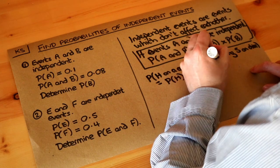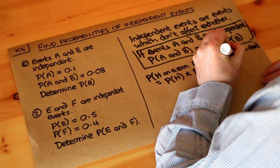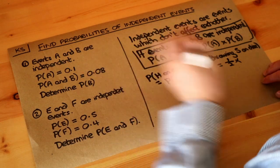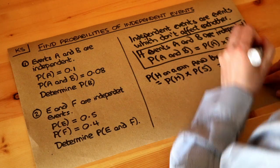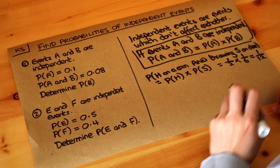Now the probability of getting a head on a fair coin is just one-half, and the probability of getting a five on a fair dice is just one-sixth. We multiply those together, and therefore the combined probability of both happening is just one-twelfth.